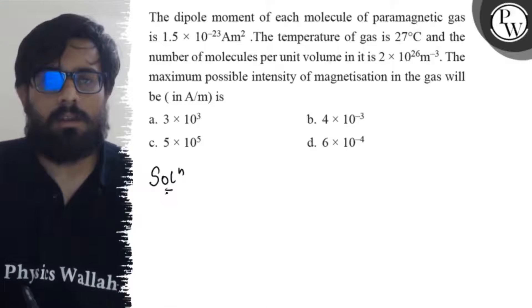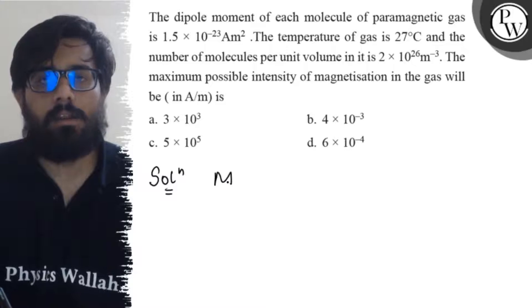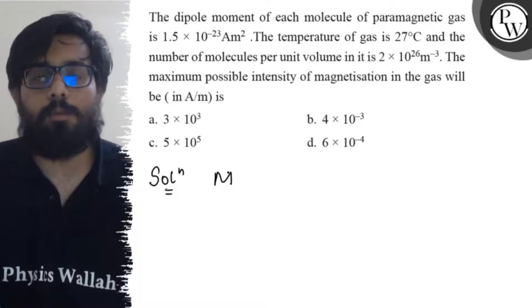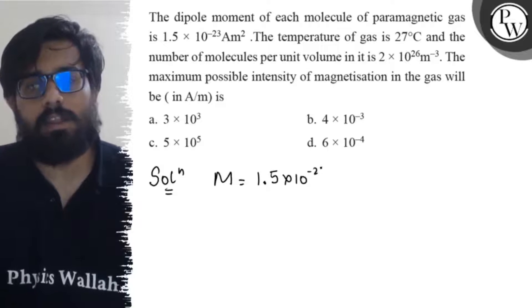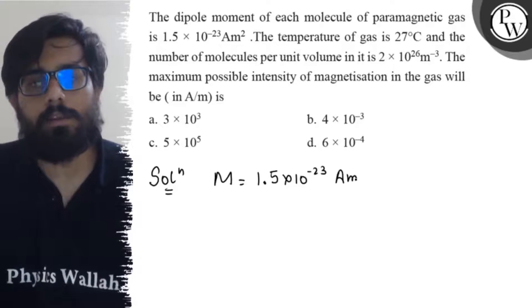So in this question we have the dipole moment of each molecule, the dipole moment per molecule for a single molecule, which is 1.5 × 10^-23 ampere meter square.